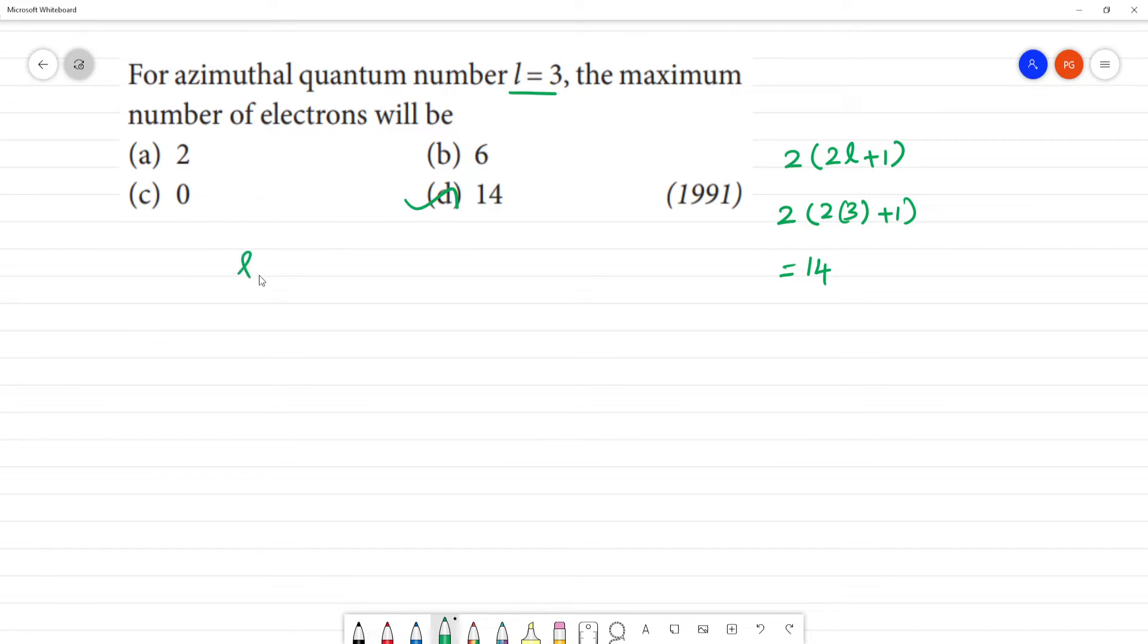L equals 0 is S, 1 is P, 2 is D, 3 is F. So F orbital - if we have an F subshell, how many orbitals are there? 7 orbitals.